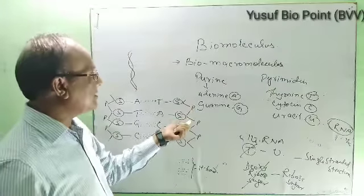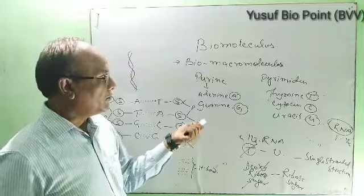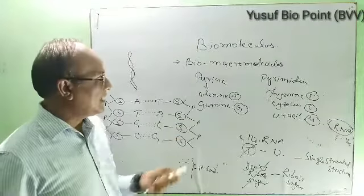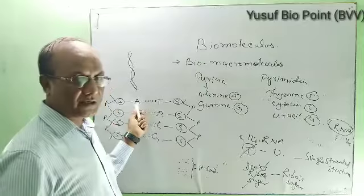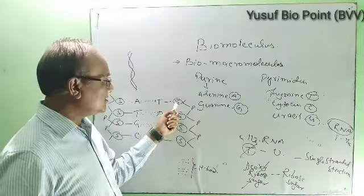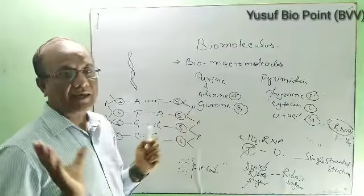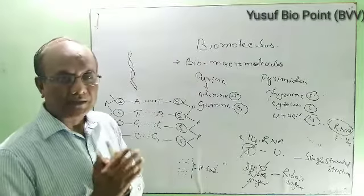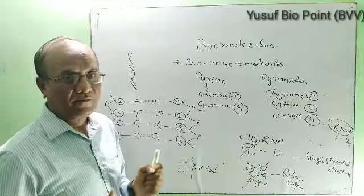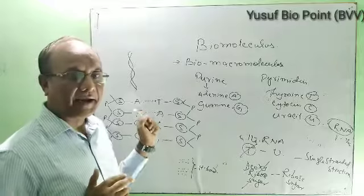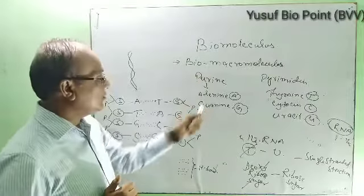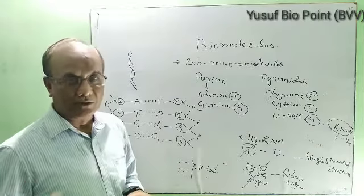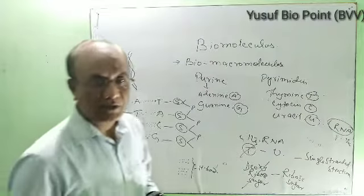Nucleic acid is of two types: deoxyribonucleic acid and ribonucleic acid. They are composed of nitrogenous base, sugar, and phosphate — and the monomer units are called nucleotides. Many nucleotides arranged together form a nucleic acid. DNA is the genetic material.